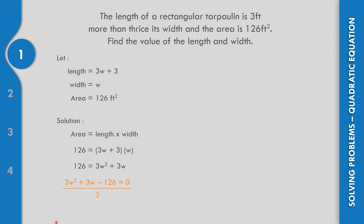If we divide both sides by 3 to get the lowest term and make factoring easier: 3 divided by 3 is W squared, 3 divided by 3 is plus W, 126 divided by 3 is negative 42, equals 0. Afterwards, this is factorable, so we may use factoring.